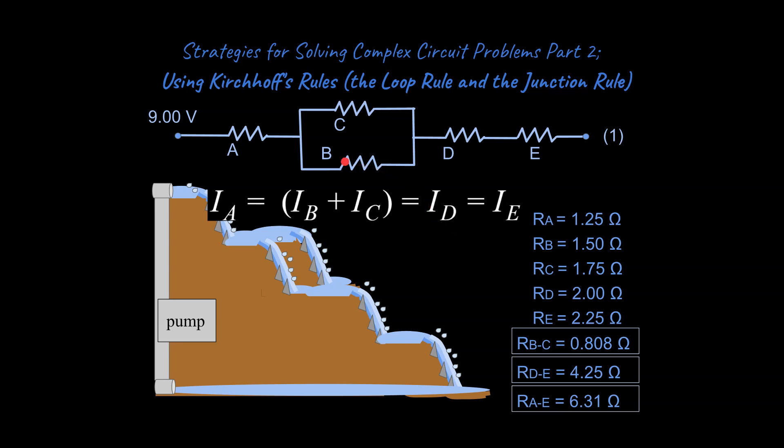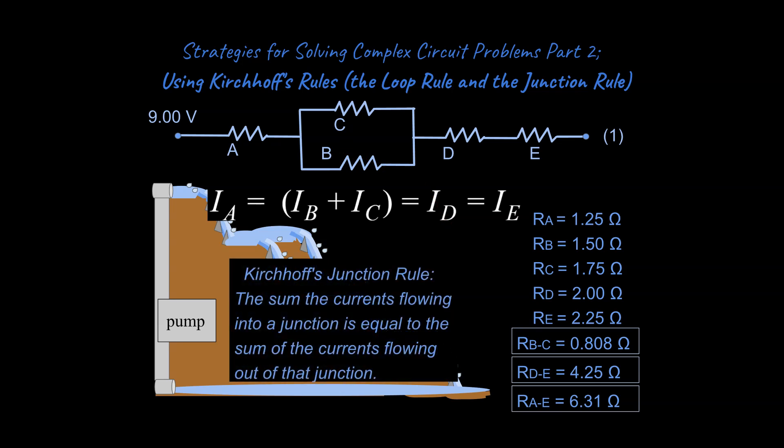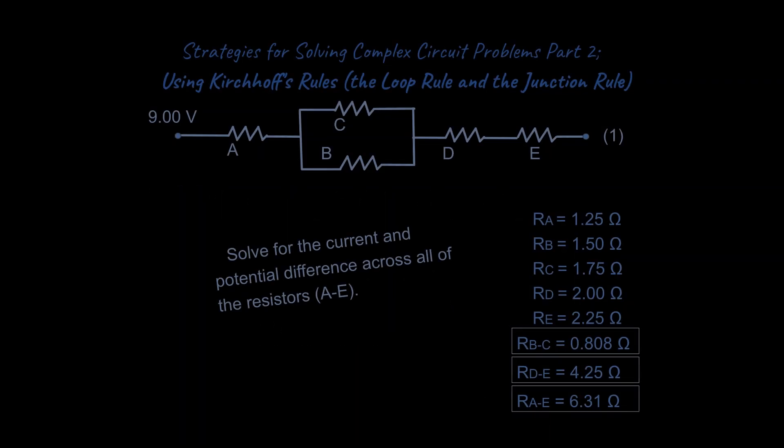And so if we say the current for A is equal to D is equal to E, that's true, but the point that I want to get to that's a little more subtle is that sum of that current is going to be distributed through pathways B and C. So this current total, say through D, should equal the sum of B and C. And that's Kirchhoff's junction rule. So the sum of the currents flowing into a junction is equal to the sum of the currents flowing out of that junction. That also makes sense, right?